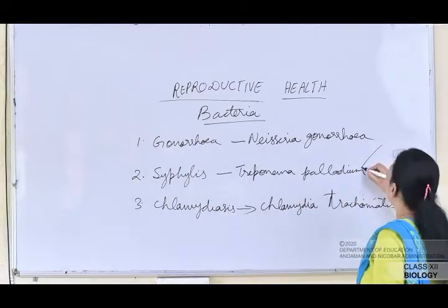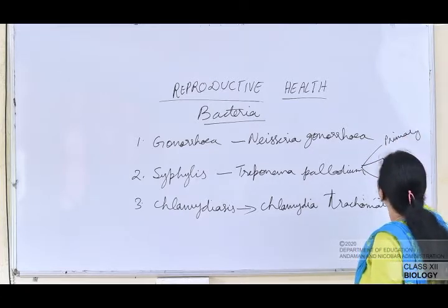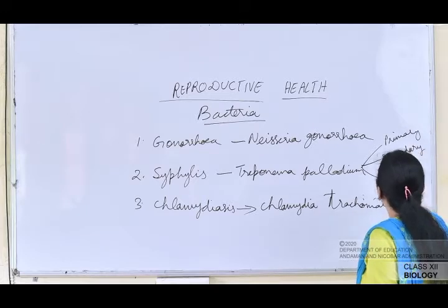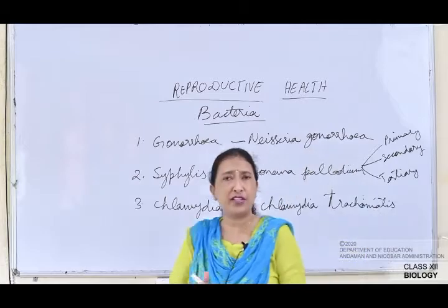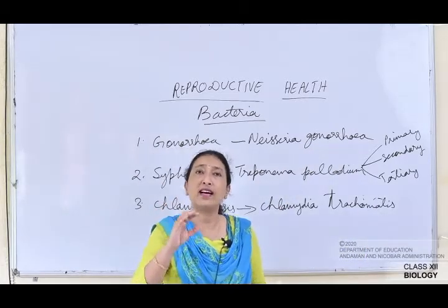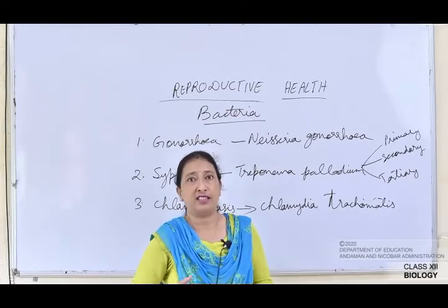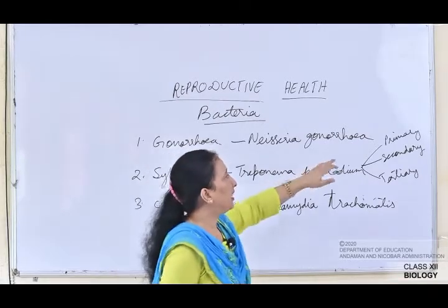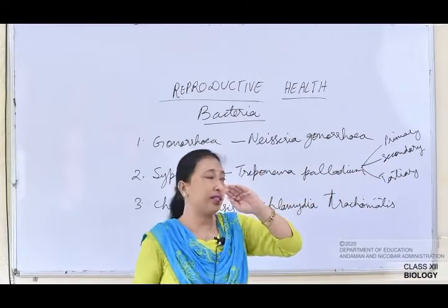Syphilis is caused in three stages: primary stage, secondary stage, and tertiary stage. In the primary stage, the first form of infection takes place — painless ulcers will be found on the outer region of the genital area.